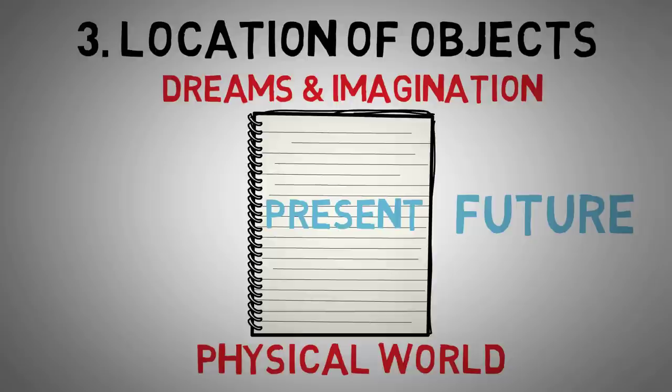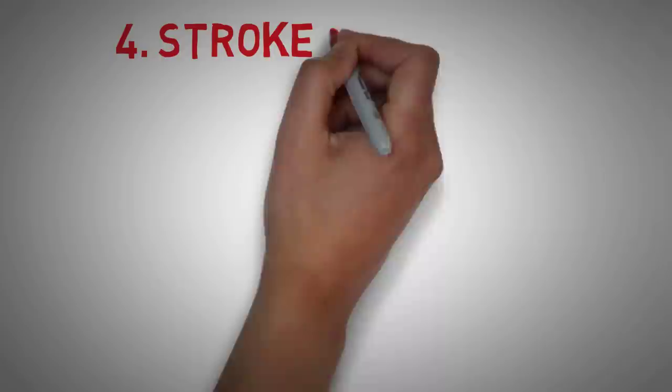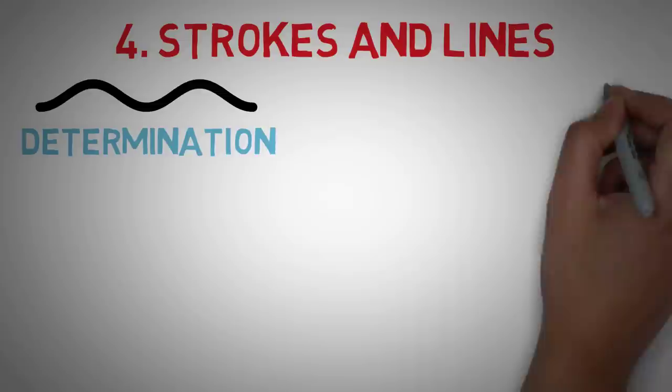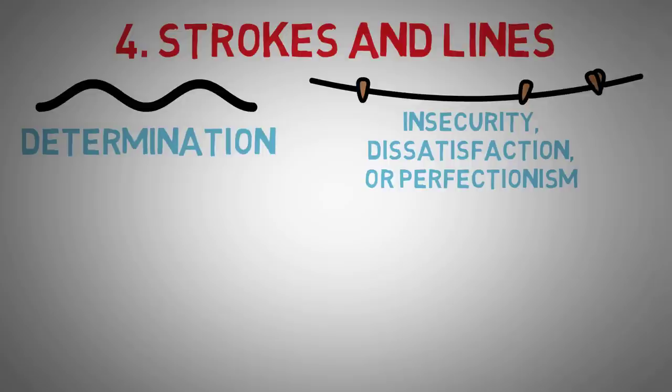Fourth, we have strokes and lines. The pressure, firmness, and solidity of strokes and lines indicate determinedness, determination, and decision-making faculties. The same line drawn twice sometimes shows insecurity, dissatisfaction, or perfectionism. Emotional strength, high self-esteem, and confidence are usually reflected in the firmness of the lines.